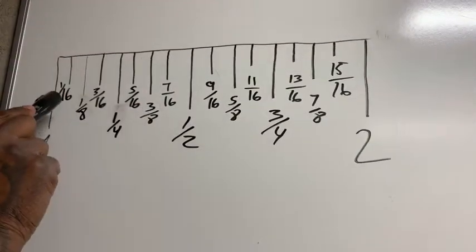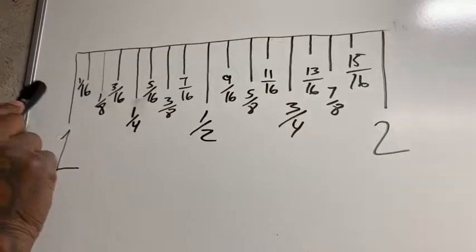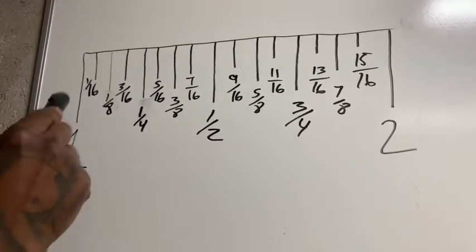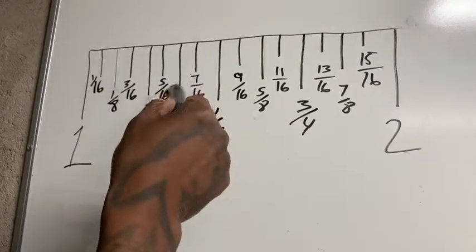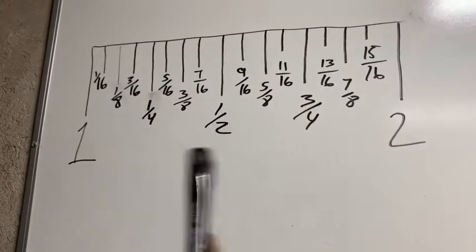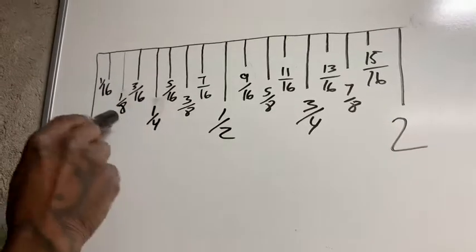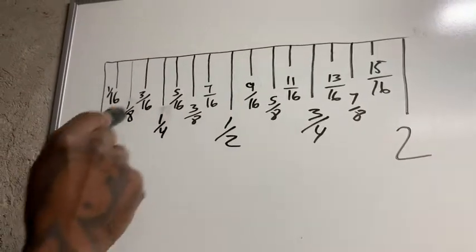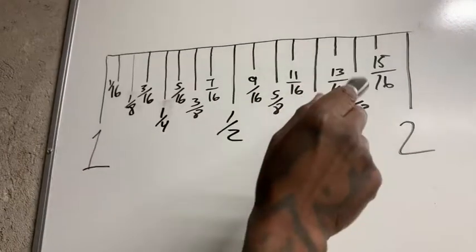Now your sixteenths are always going to be odd numbers — remember that. So you're always going to go one-sixteenth, three-sixteenths, five-sixteenths, seven-sixteenths, nine-sixteenths, because none of those numbers can be divided by two, four, or eight. Same thing with your eighths: you're going to have one-eighth, three-eighths, five-eighths, seven-eighths.